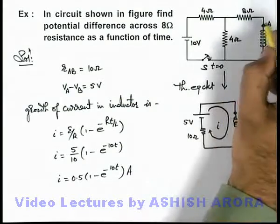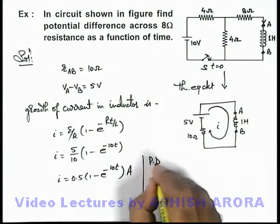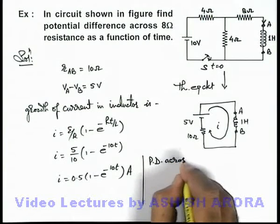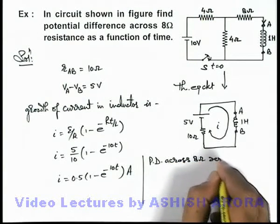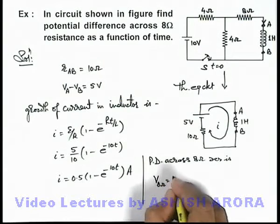And the same current will be there through this inductor so we can write here the potential difference across 8 ohm resistance is, this potential difference across 8 ohm we can write as iR.